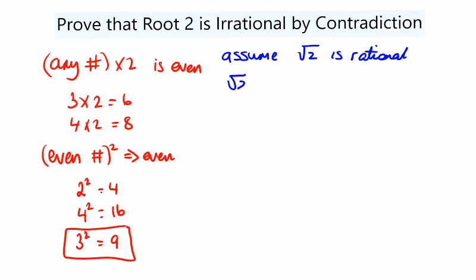So root 2 is equal to a over b. If we square both sides we're going to get 2 is equal to a squared over b squared. And cross multiplying we get 2b squared is equal to a squared. And if 2b squared is equal to a squared, because 2 is a factor, this must be even.